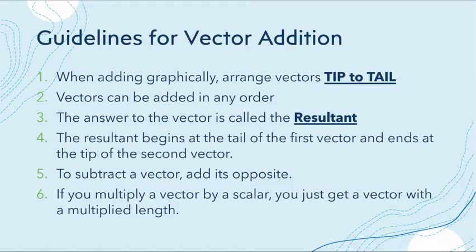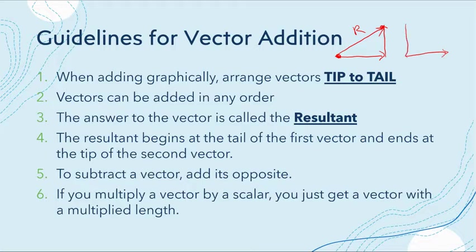So our guidelines for vector addition: the first thing you always want to do is go tip to tail. For example, if I'm adding two vectors, I add them tip to tail and my resultant goes from the tail of the first to the head of the last. You do not want to go tail to tail — that is not correct.